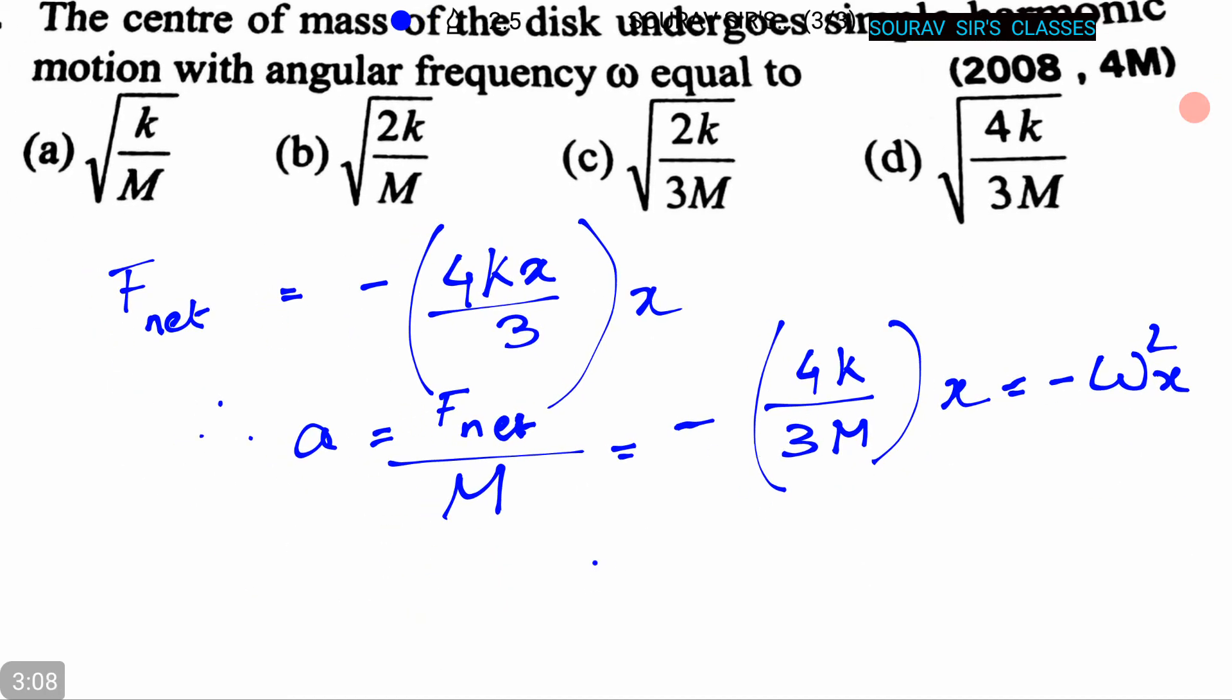So ω equals √(4k/3M). This equals √(4k/3M). So here option D is our correct answer.